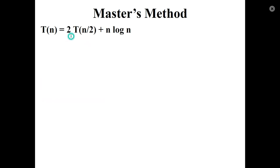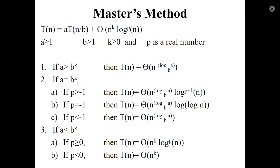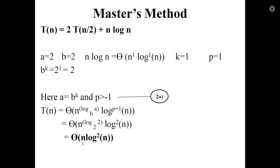The next question: T(n) = 2T(n/2) + n log n. Here a = 2, b = 2, and n log n = Θ(n¹ · log¹(n)), so k = 1 and p = 1. Find b^k: 2¹ = 2. Since a = b^k and p = 1 > −1, T(n) = Θ(n^(log_2(2)) · log^(p+1)(n)) = Θ(n · log²(n)).